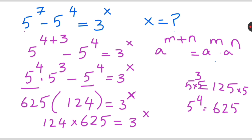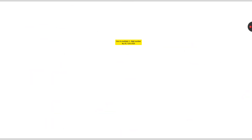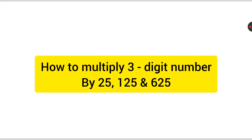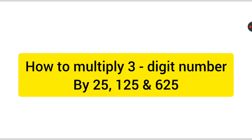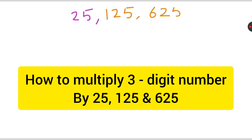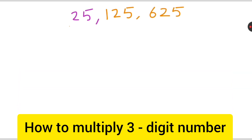Now I am going to show you a smart trick for how to multiply by 625. Before starting with 625, let's start with the simpler numbers — 25, 125, and 625 — to show how to multiply a 3-digit number by each of these.